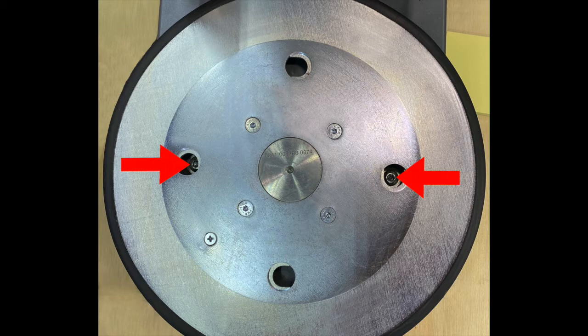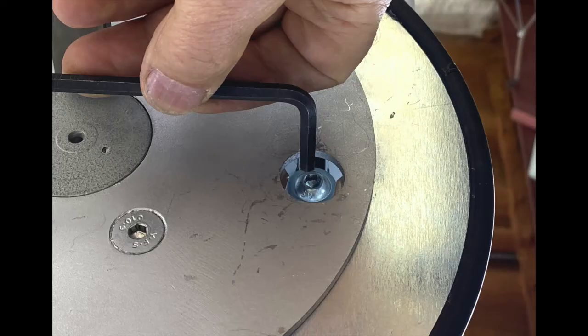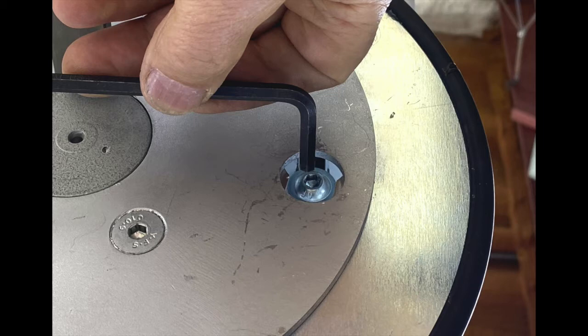The mixer bowl feet fit into those holes. Right now, of course, the bowl is out. So we can reach up through two of those holes and have access to the heads of these two bolts.